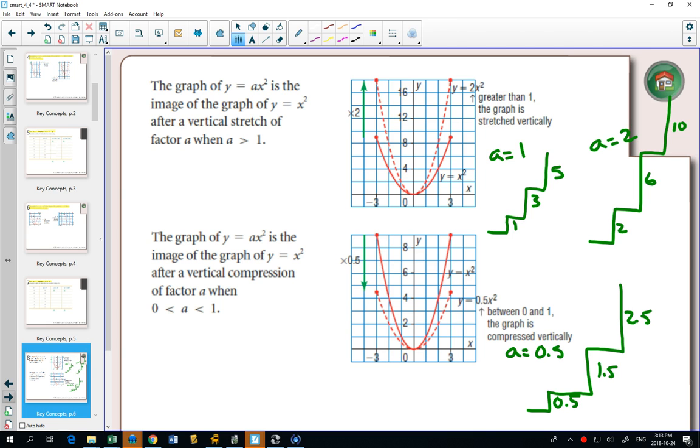So basically, this is 1 over 2, 3 over 2, 5 over 2. Whatever your a value is, the 1, 3, 5 pattern gets multiplied by that.